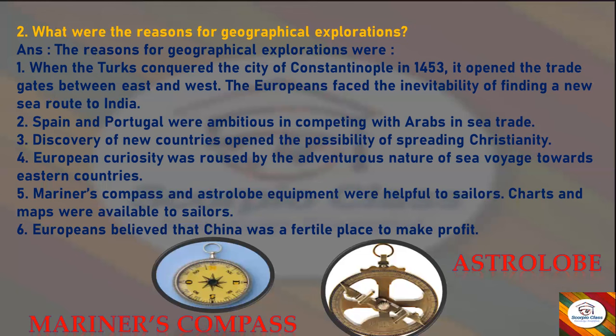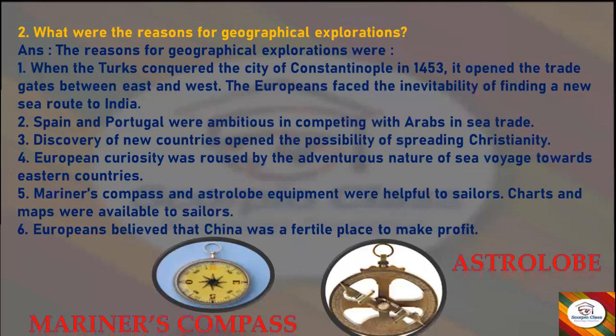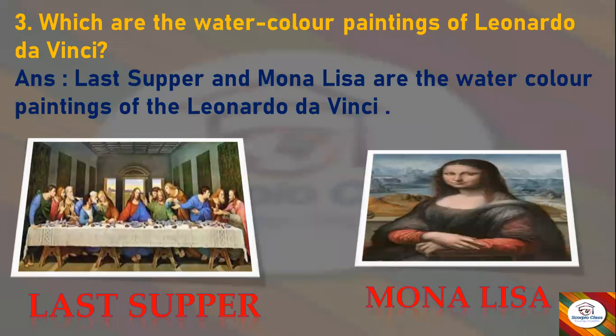These are the answers for the reasons for geographical explorations. You can also see the picture of the mariner's compass and astrolabe, an instrument which was helpful for sailors for the identification of directions. Next question: Which are the watercolour paintings of Leonardo da Vinci? Answer: The Last Supper and Mona Lisa are the watercolour paintings of Leonardo da Vinci. You can see the picture of both the paintings — Last Supper and Mona Lisa.